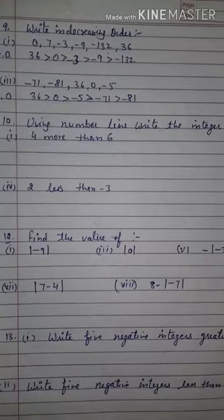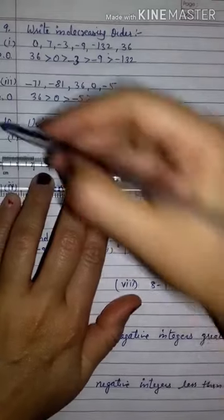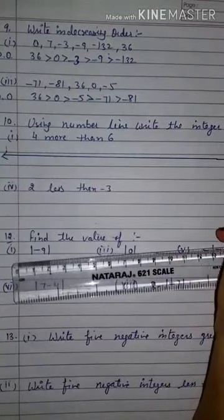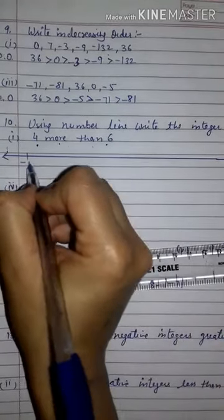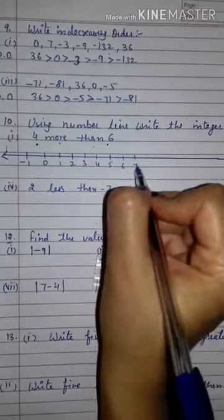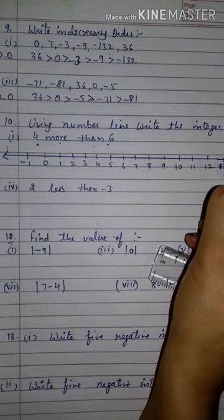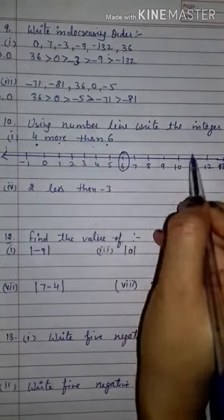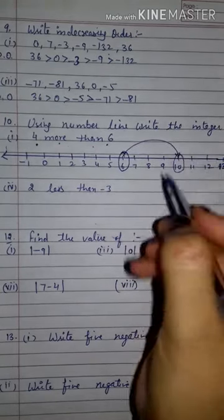10th question: using the number line, write the integer which is 4 more than 6. Draw the number line. 4 more than 6 means all numbers are positive, so draw from 0 to 13. We start from 6 and move 4 steps to the right. This brings us to 10. So the answer is 10.